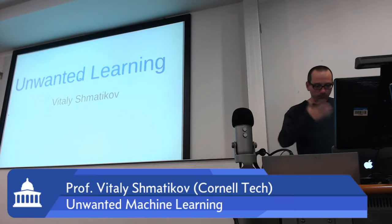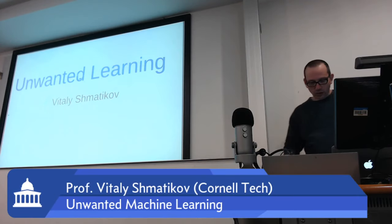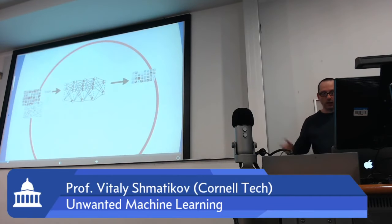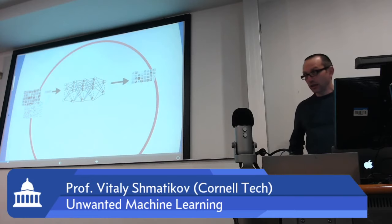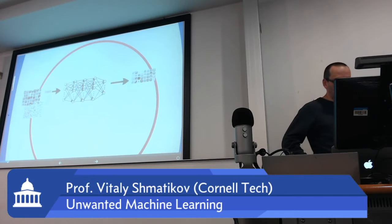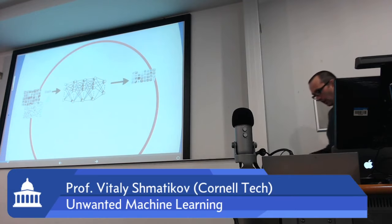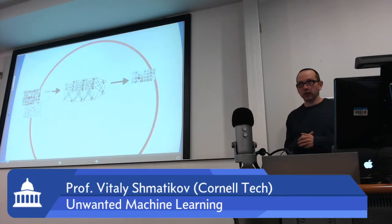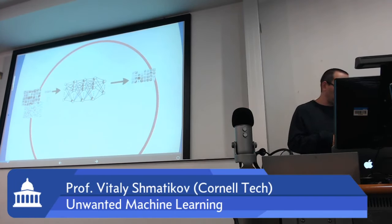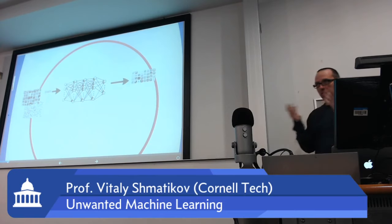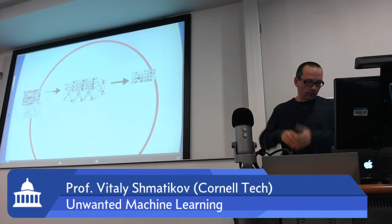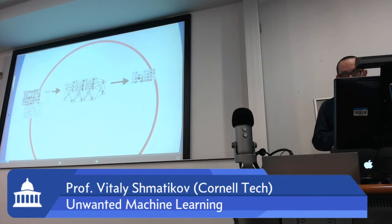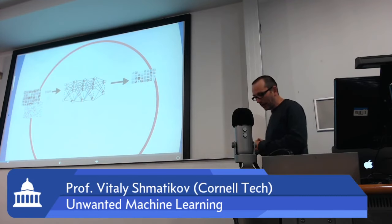I'm going to talk a little bit about machine learning and security and privacy, and try to keep it fairly informal. Let me start with what I know about machine learning, which is honestly not a hell of a lot. From what I understand, the way it works is you collect a whole bunch of data, a big pile of data, then you train a model — which these days typically means a neural network, possibly a very substantial neural network — and then life is good.